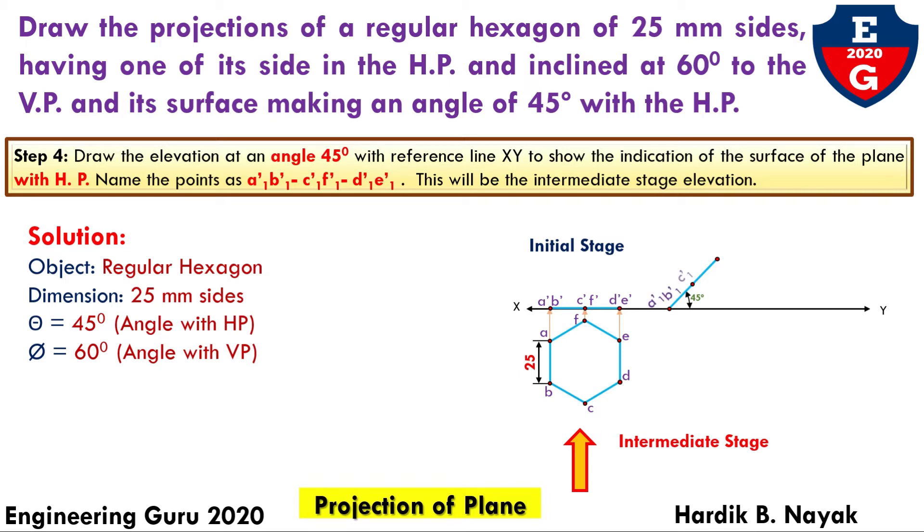Name the points as A1 dash, B1 dash, C1 dash, F1 dash, D1 dash, E1 dash. Now, step number five.